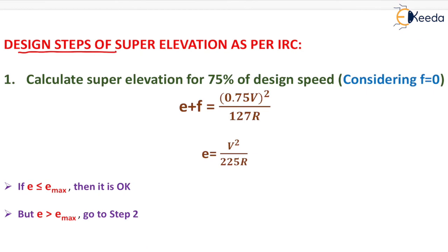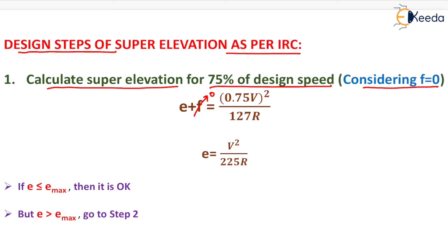Design steps of super elevation as per the Indian Road Congress: Step 1 — calculate super elevation for 75% of design speed with coefficient of friction equal to zero. Using e = (0.75V)² / 127R, we get e = V² / 225R. If this value is less than or equal to e max, it is acceptable.